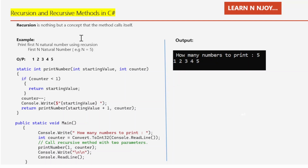Let's try to understand it with the help of an example. Here we want to write a program to print the first N natural numbers using recursion. For example, if you provide N equal to 5, then the output should be shown as 1, 2, 3, 4, 5.